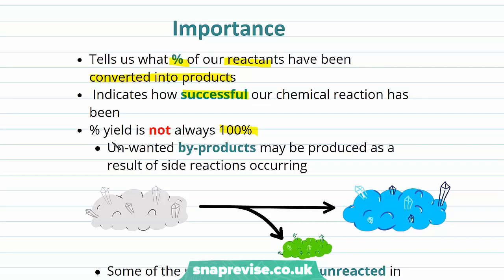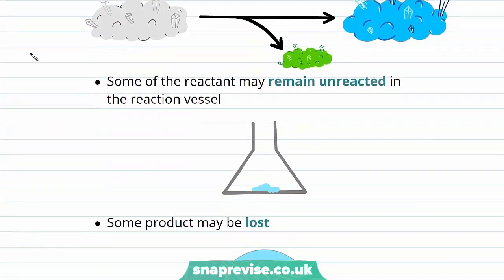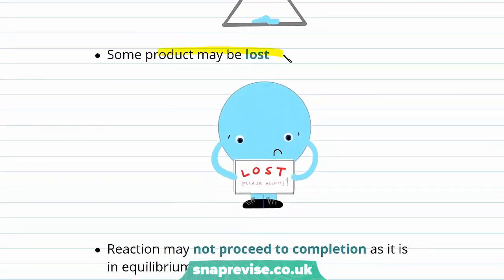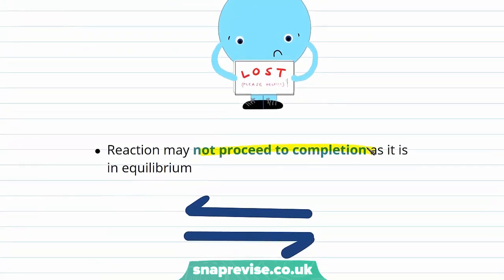The first reason is that unwanted by-products may be produced as a result of side reactions occurring. I've indicated that unwanted by-product by showing that little green compound over there — not all of our grey reactant is forming our blue product, some is forming this green by-product. Some of the reactant may also remain unreacted in the reaction vessel, some product may be lost, and the reaction may not proceed to completion if it's in equilibrium.